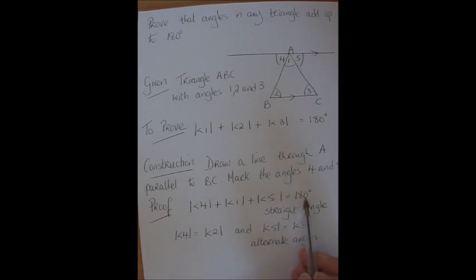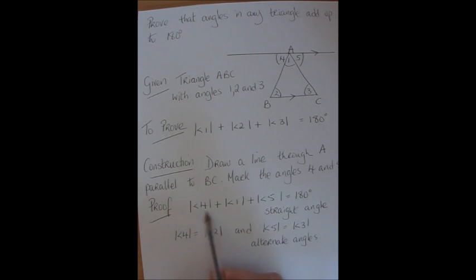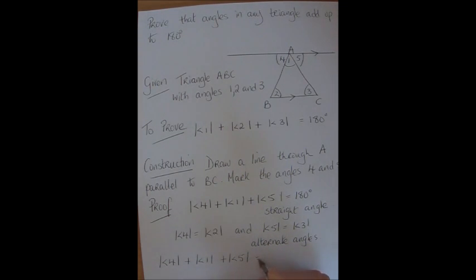Now if we look at our original straight angle which is made up of 4 and 1 and 5, we're going to replace the 4 with the 2 because they're equal and we're going to replace the 5 with the 3 because they're equal. Now let's write that down. So these three add up to be 180 degrees.